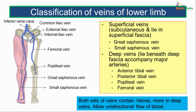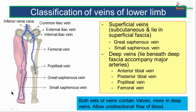Both sets of veins contain valves. More valves are seen in the deep veins compared to the superficial veins, and these valves allow unidirectional flow of blood. Starting from the inferior aspect, we see the small saphenous vein, the dorsal venous arch, and the great saphenous vein. Continuing behind the knee joint is the popliteal vein, which comes up as the femoral vein, which enters the abdomen and continues as the external iliac vein. This is joined by the internal iliac, continuing as the common iliac, and then the two common iliac veins fuse to form the inferior vena cava.